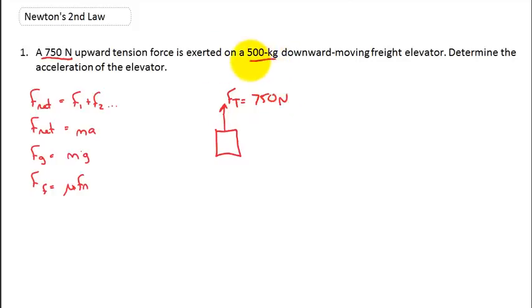We're also informed that it's a 500 kilogram elevator, and we're just going to throw this right here now. Mass equals 500 kilograms. That's going to be some useful information pretty soon. We also want to determine the acceleration of the elevator, and this is a downward moving elevator.